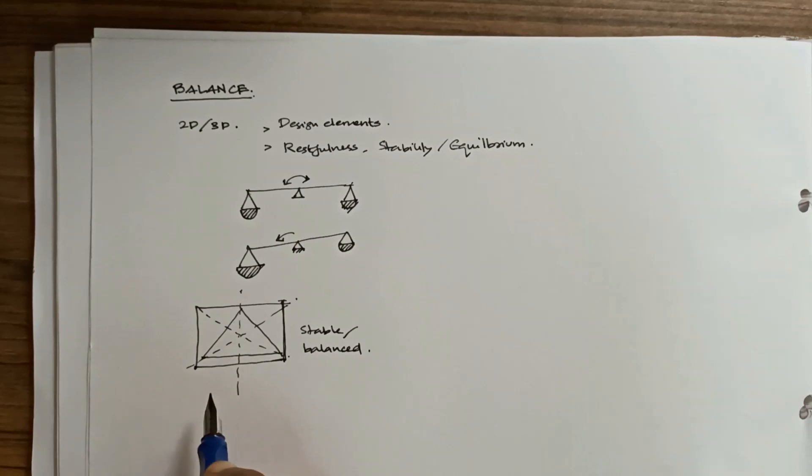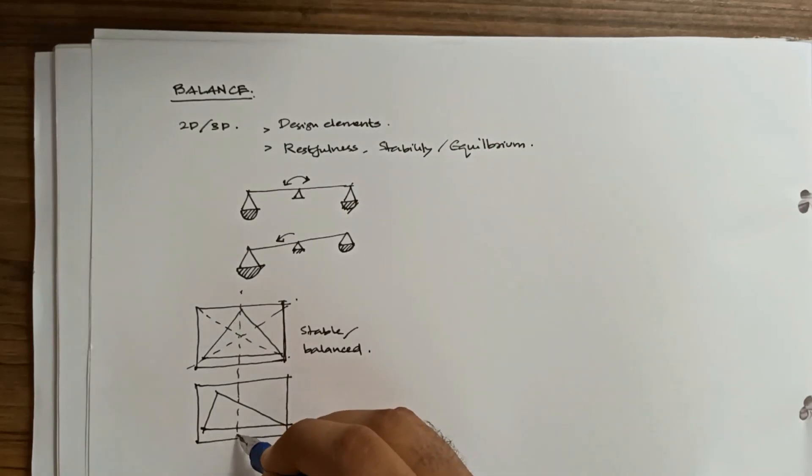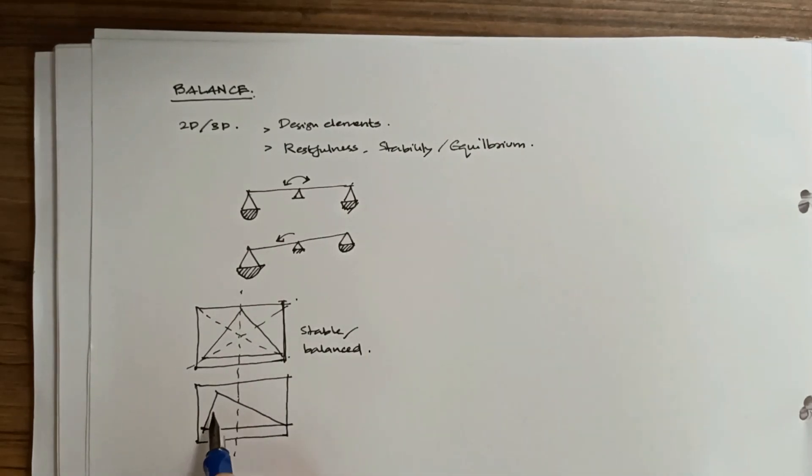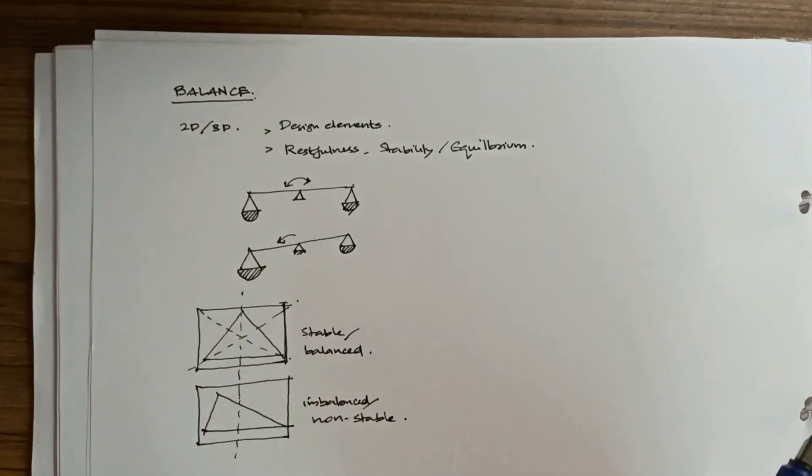Whereas in the same field if I am drawing an isosceles triangle or a non-equilateral triangle, some weight is higher on one particular side. This is an imbalanced or non-stable composition. This is how we define balance.